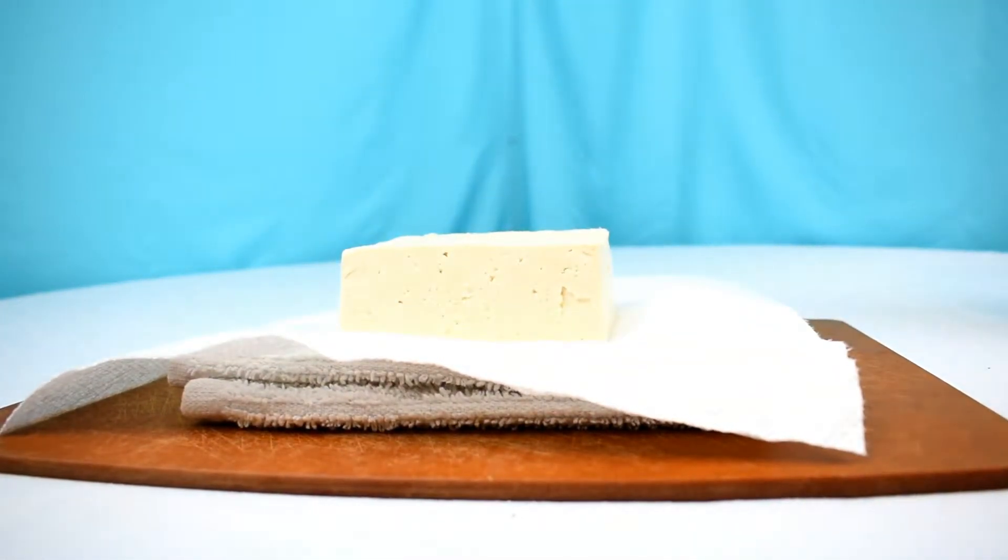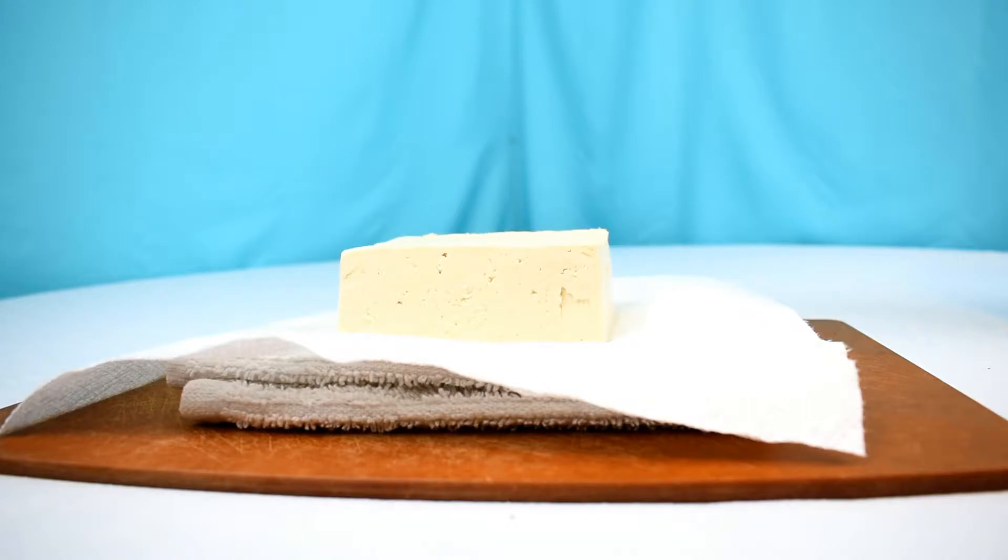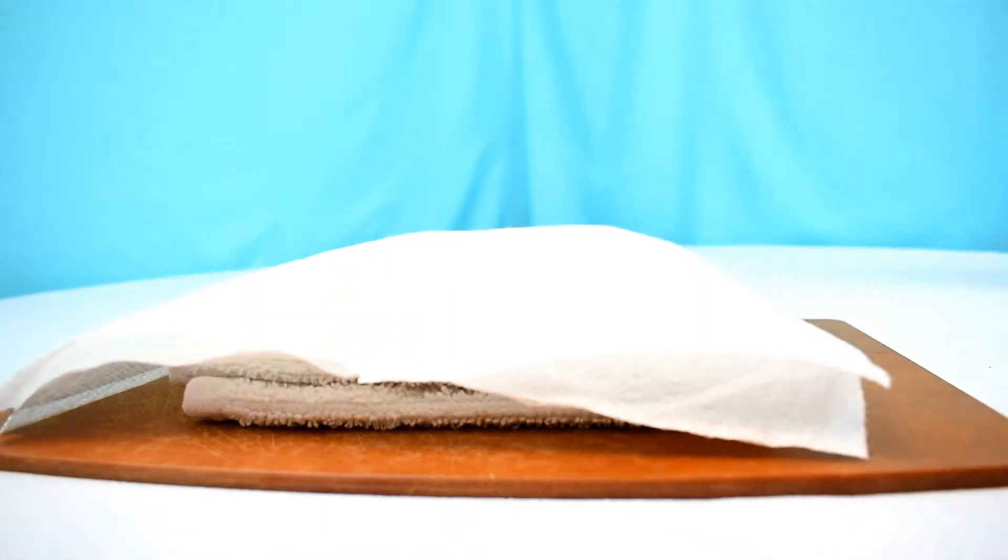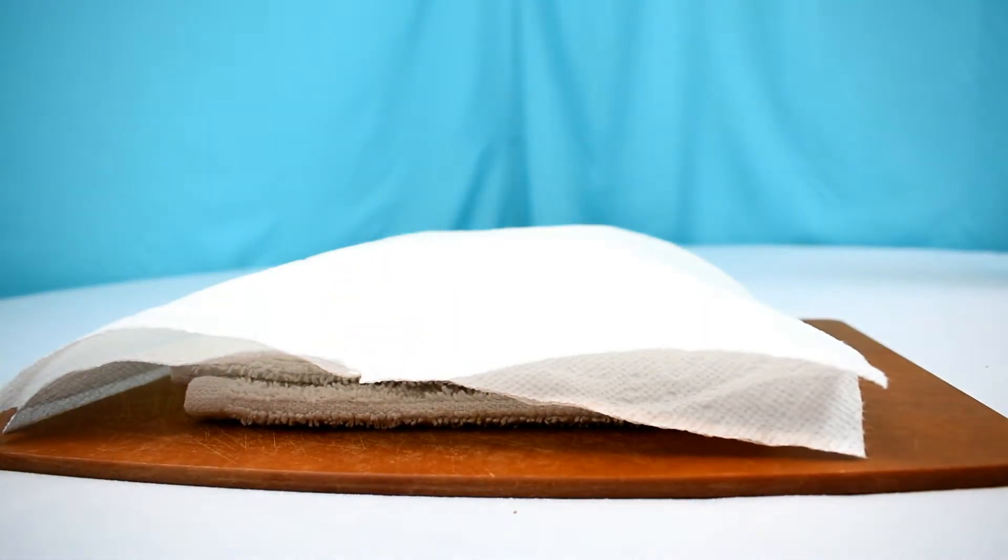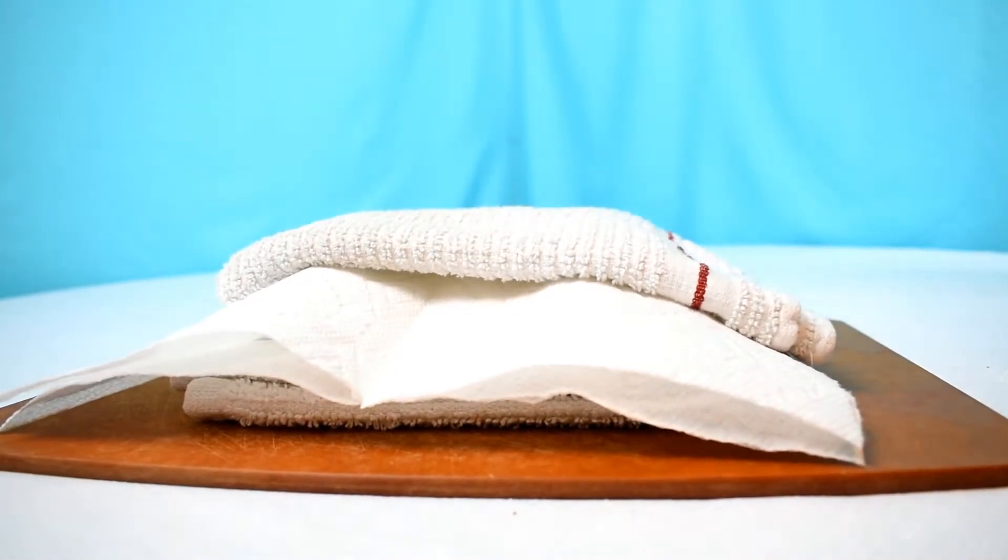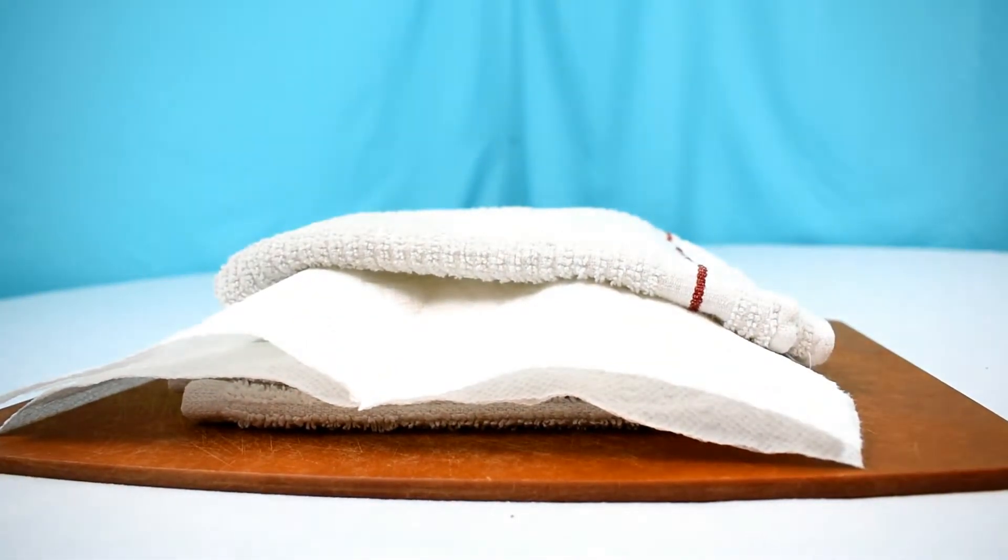So now I'm just going to place the tofu on top of the paper towel. And then I'm going to add another paper towel on the top of that. You're basically making a layered cake of tofu awesomeness. That's what we're calling it. There you go. And then there will be another hand towel on top of that one. You just plop that sucker on top and give it a little pat for good luck.